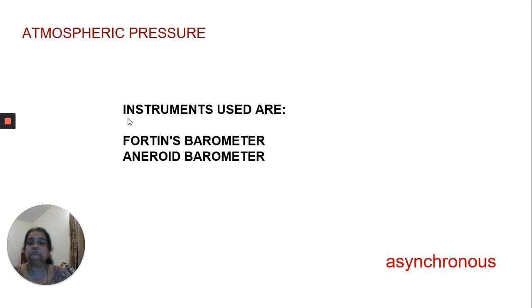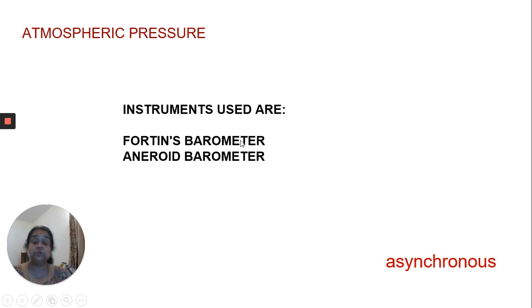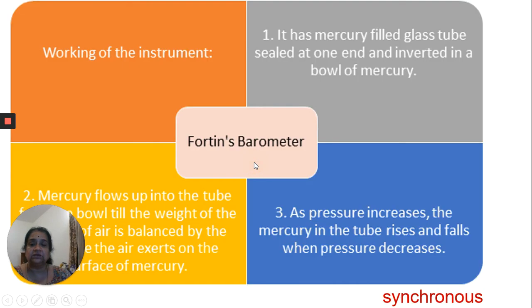For atmospheric pressure, the instruments used are Fortin's barometer — which uses mercury — and the aneroid barometer, which works without mercury.